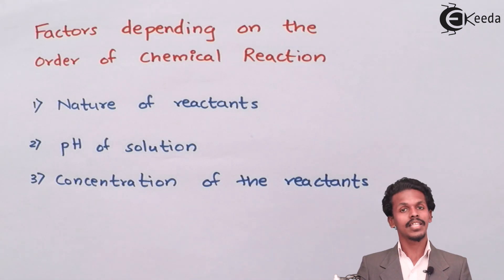So basically these are the main factors that could change the order of reaction for a rate law.